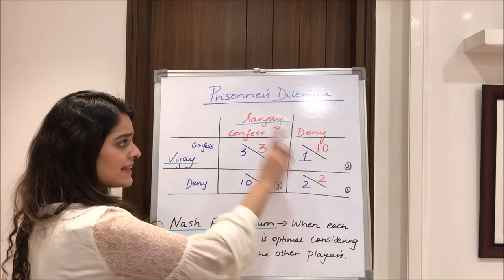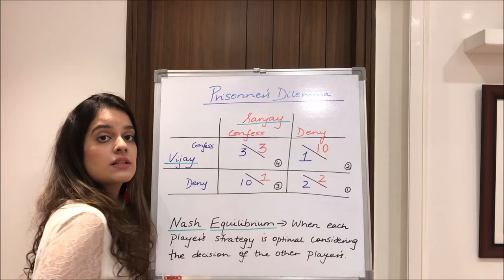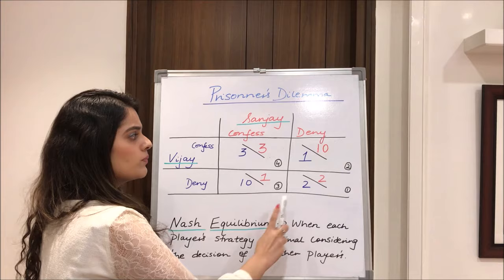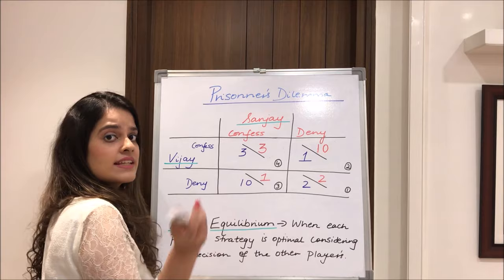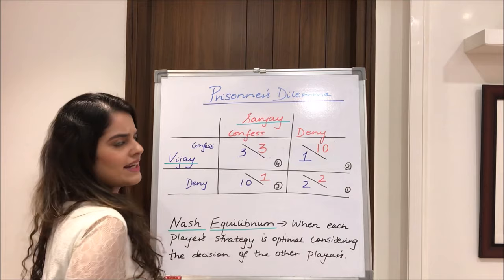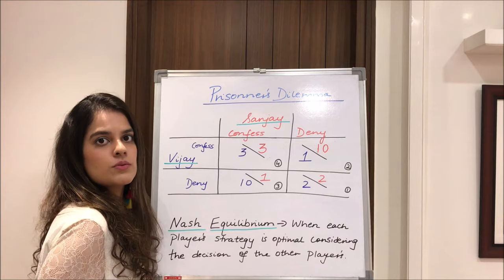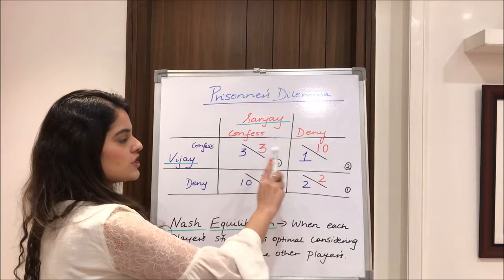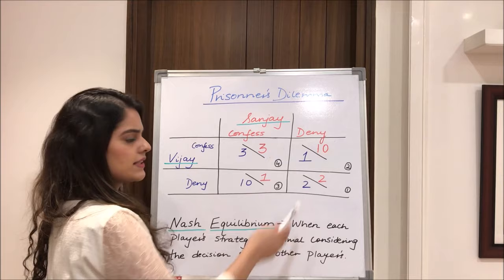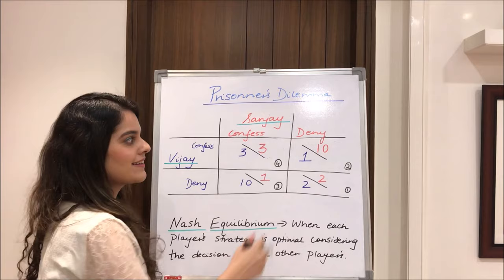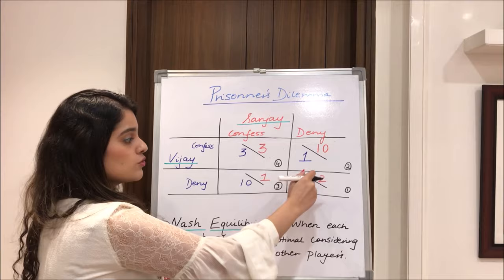Looking at the matrix, the globally optimal scenario is when both deny — the least possible imprisonment for both. But because they cannot interact with each other and each must guess what the other is thinking, they end up confessing. Vijay thinks: what if I deny and Sanjay confesses? Then I'll be stuck for ten years while he's free in one year. So it's better to get three years than ten. Similarly, Sanjay thinks: what if I deny and Vijay confesses? I'd get ten years while he gets one. So it's better to take three years. Both end up confessing, and that outcome is the Nash equilibrium.